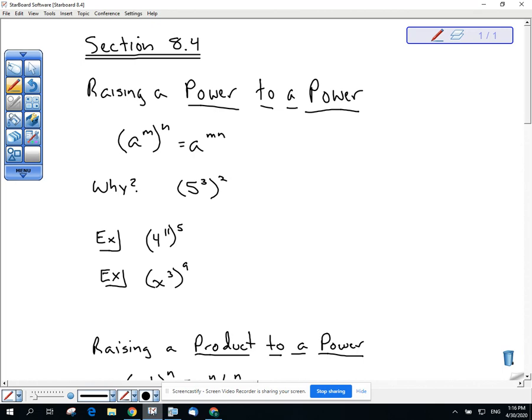There are two. One of them is called raising a power to a power. And there's an example that's given here. a to the m to the n is equal to a to the m times n. As you raise a power to another power, it ends up being that same base to the product of the two powers.